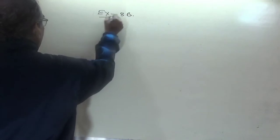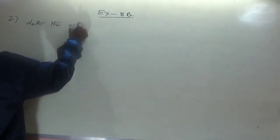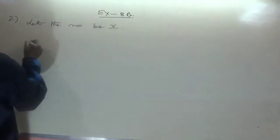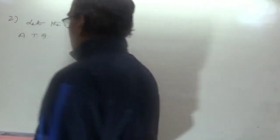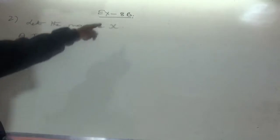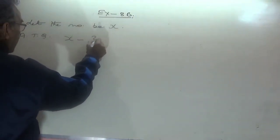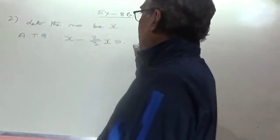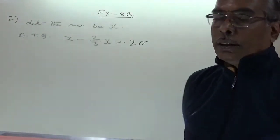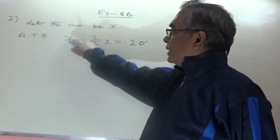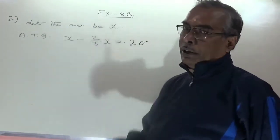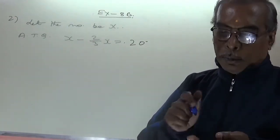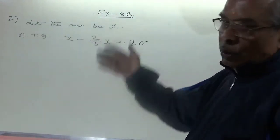Let the original number be x. According to the question, two-thirds of the number is 20 less than the original number. So x minus (2/3)x equals 20. That is the equation formed — you crack the language and frame the equation.